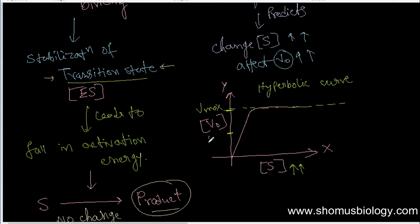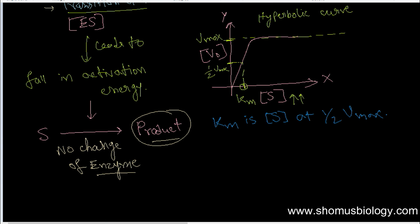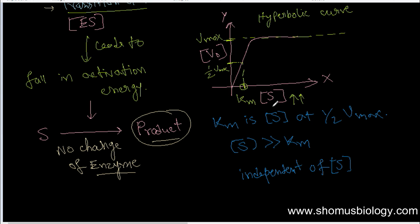Half of Vmax can be identified on the graph, and if we project that to the x-axis, that intersection gives us Km. So Km is the substrate concentration at half of Vmax. When the substrate concentration is way more than the Km value, the enzymatic reaction rate becomes independent of substrate concentration. Normally the velocity is dependent on substrate concentration, but if substrate concentration greatly exceeds Km, the reaction rate will be independent of substrate concentration.